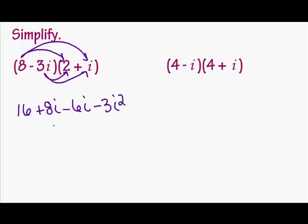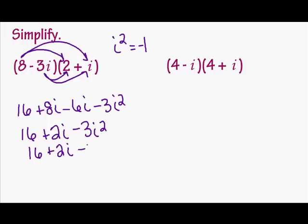So let's collect like terms. So I'm going to have 16, 8i minus 6i is 2i, minus 3i squared. Now remember, i squared equals negative 1. So I'm going to have 16 plus 2i minus 3 times negative 1. We're going to take it one more step here, because negative 3 times negative 1 is 3. Now we still have like terms to collect. 16 plus 3 is 19. So I'm going to have 19 plus 2i.